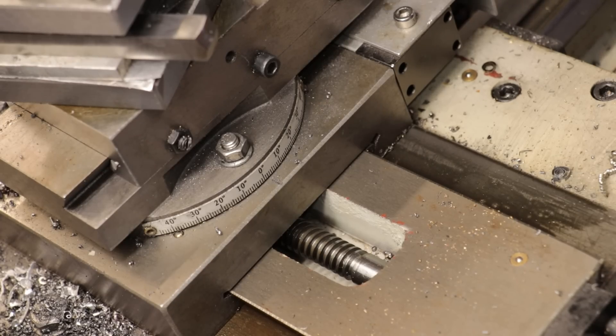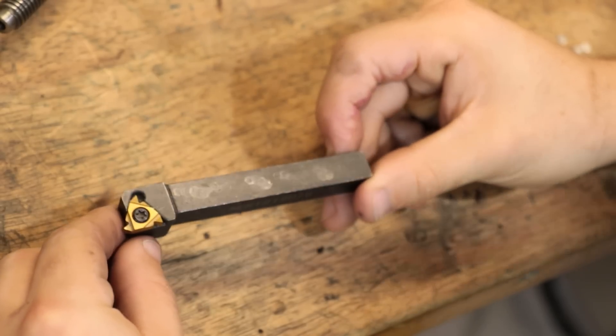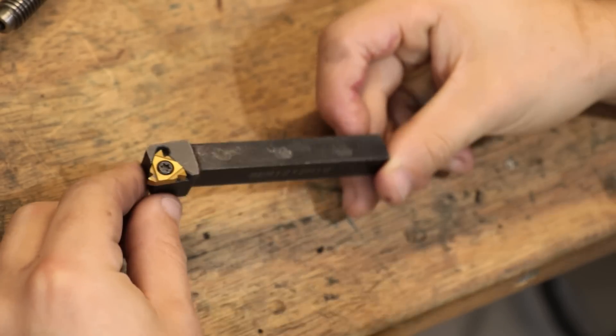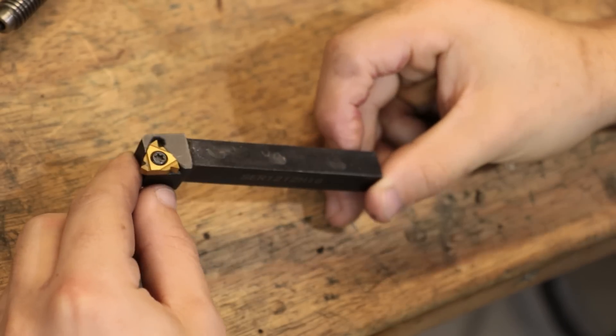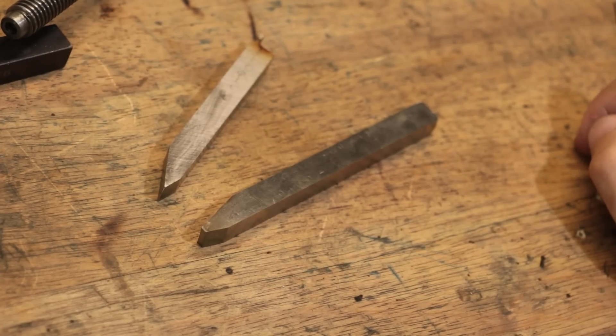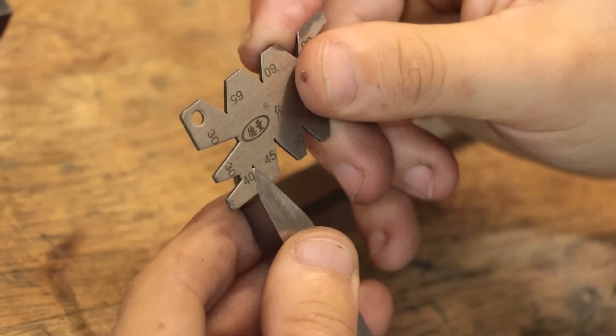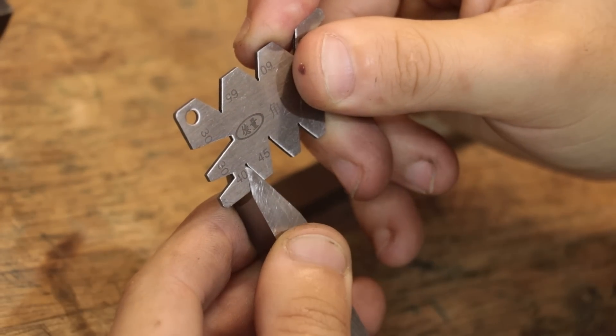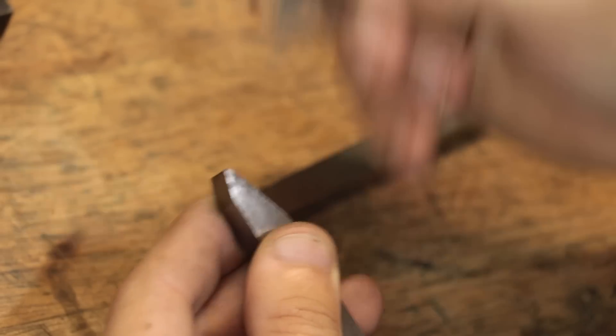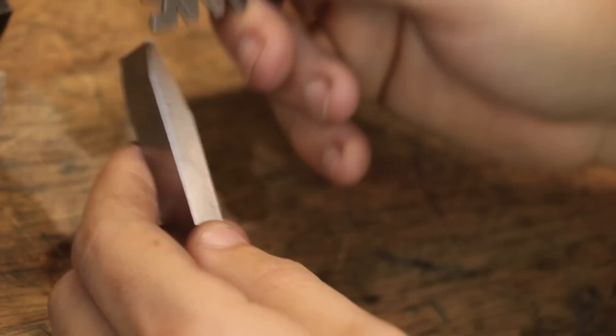So essentially, for the cross slide, it's going to be righty-loosey, lefty-tighty. Now obviously, I'd normally rely on carbide for doing this, but I don't have any trapezoidal cutting inserts, so instead, I'm going to use some high-speed steel. I thought I'd be right to use this one, but I forgot this one is actually made for cutting gear hobs. The angle that it cuts is a bit off. The other one should be good though.